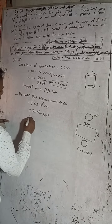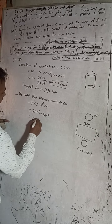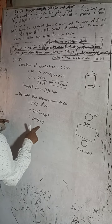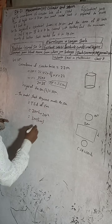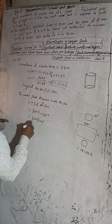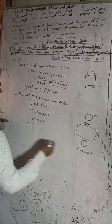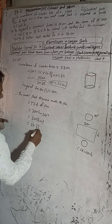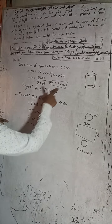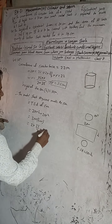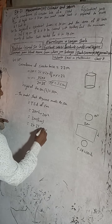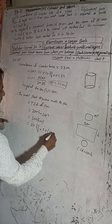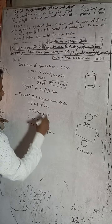Taking common: total surface area = 2πr(h + r). This is our formula for total surface area. We can use the formula directly. Now substituting: 2π = 22/7, r = 3.5, h = 10, plus r = 3.5. So: 2 × (22/7) × 3.5 × (10 + 3.5).